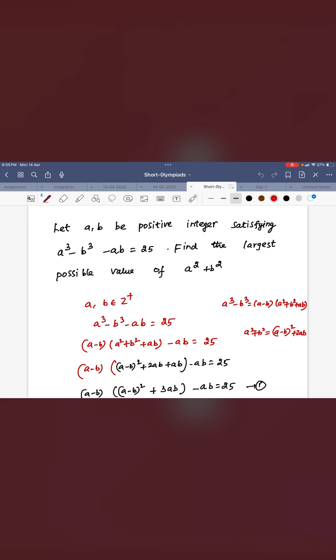A, B are positive integers satisfying A³ - B³ - AB = 25. Find the largest possible value of A² + B².